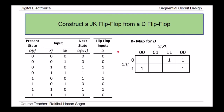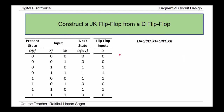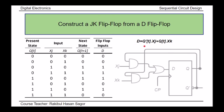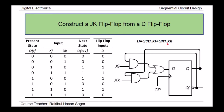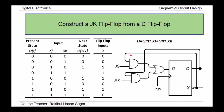From the Karnaugh map for D input, mapping all the ones and simplifying, we get the Boolean expression: D equals Q prime times XJ plus Q times XK prime. Finally, the logic diagram is constructed based on this expression. The D flip-flop is used with a combinational logic block that takes feedback from the output Q, implementing the JK flip-flop behavior externally.